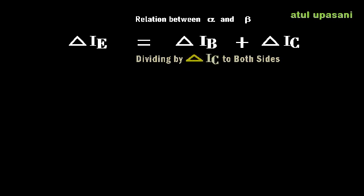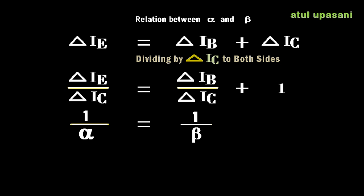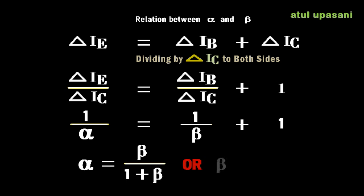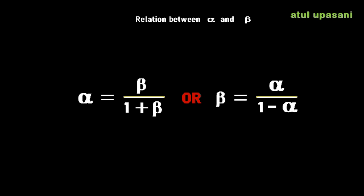Dividing both sides by ΔIC gives ΔIE/ΔIC = ΔIB/ΔIC + 1. The left-hand side ΔIE/ΔIC is the inverse of alpha, so we get 1/alpha = 1/beta + 1. Rearranging, we get alpha = beta/(1 + beta), and equivalently beta = alpha/(1 − alpha). This is the relation between the current amplification factors alpha and beta, allowing us to change between configurations.